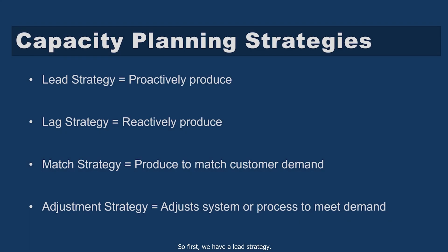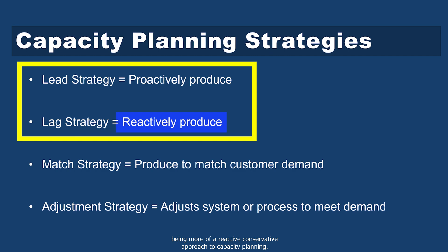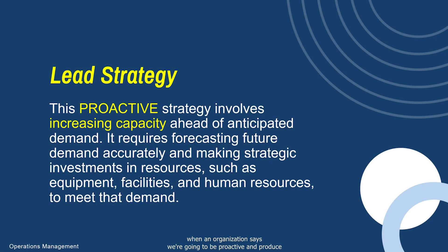First, we have the lead strategy. You can look at lead and lag as opposites — lead being a proactive capacity planning approach and lag being more of a reactive, conservative approach to capacity planning. A lead strategy is when an organization says we're going to be proactive and produce aggressively because we have that much confidence in our product.